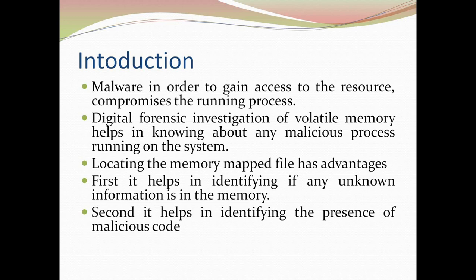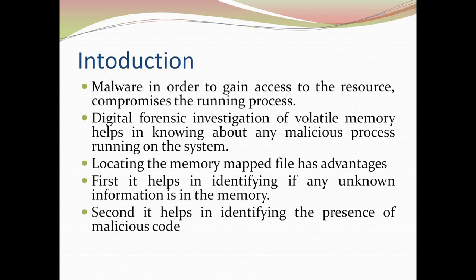Where does the attacker inject code? A running process has various files associated with it — executable files or DLL files in Windows. A portable executable (PE) file is made up of various sections: a header section, a code section, a data section, and resource sections. The attacker targets the code section and injects malicious code there. Once the code section is altered and executed by the microprocessor, the injected code carries out the attacker's objectives.